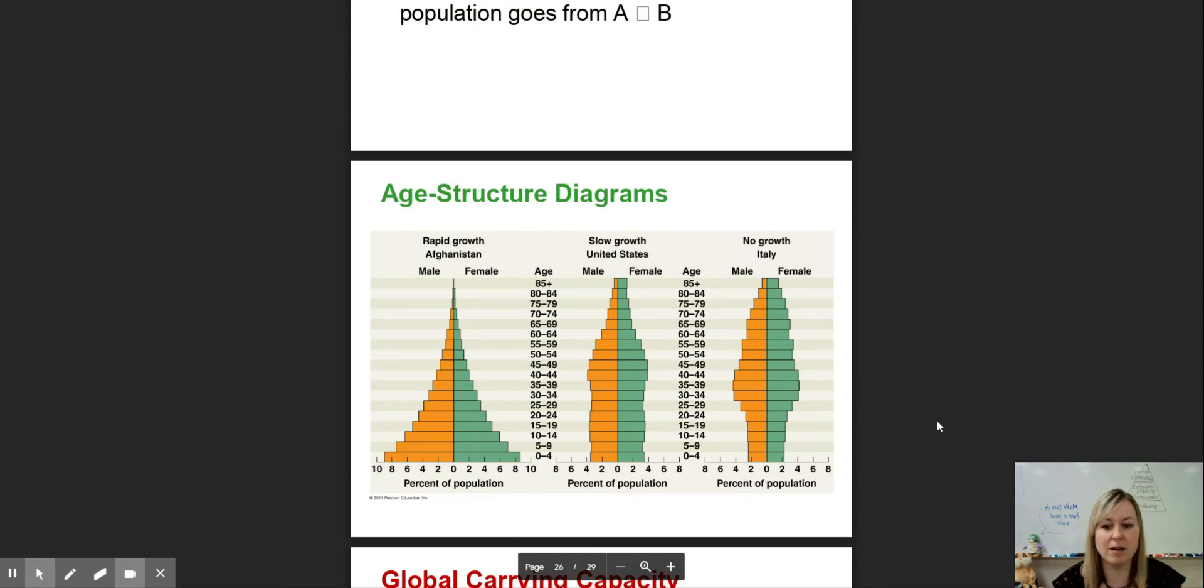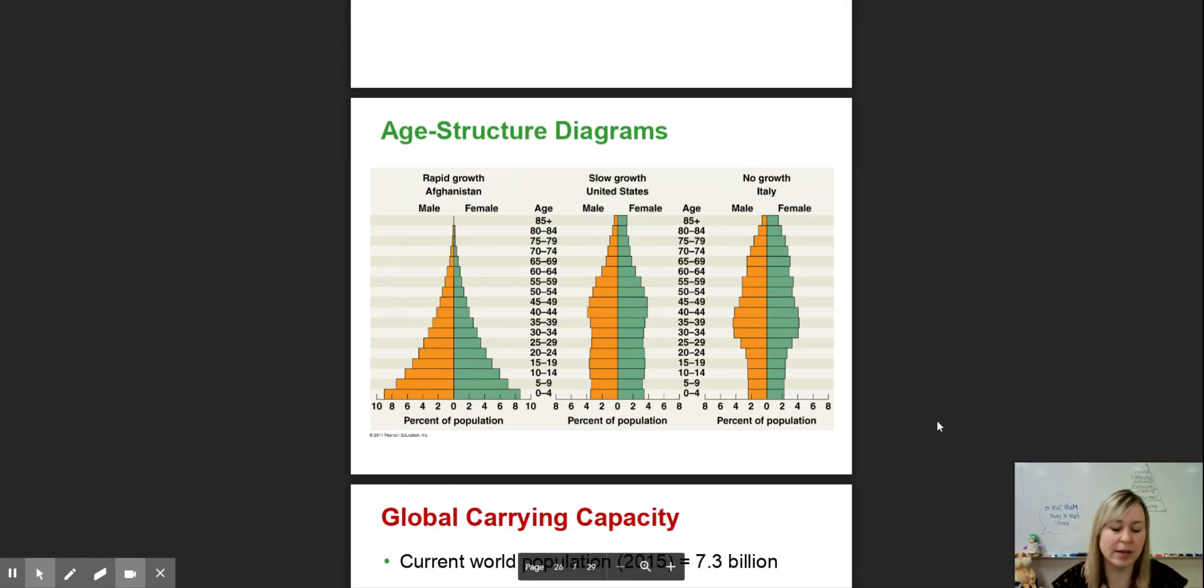Different looking age structure diagrams. You could look at what those look like in different countries. The United States has very slow growth. In fact, I think there was some numbers that came out last year that said we actually are experiencing negative growth. For the first time in a long time, more people are dying than are being born. You could see Afghanistan, lots and lots of young children, but not many make it past age 50.